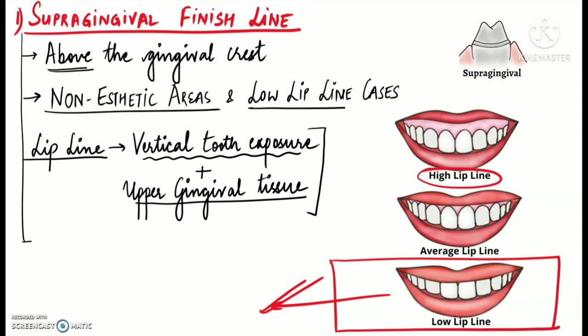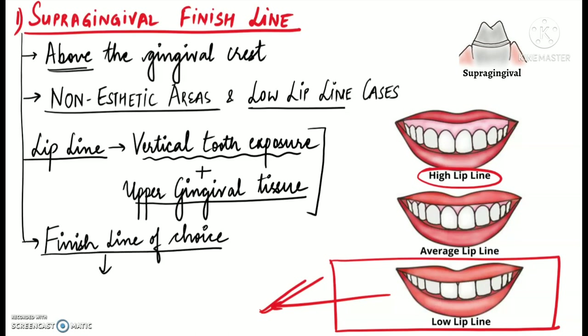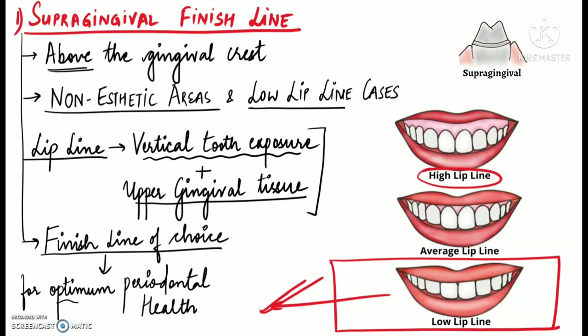I will talk about the lip lines in a separate video and the link will be provided in the description box below. For now, supra-gingival finish lines are preferably given in low lip line cases because the aesthetics factor will not be much of an issue as the finish line will be covered by the upper lip. Ideally, finish lines should be placed supra-gingivally whenever possible, as they stay away from the periodontal tissues and should be the finish line of choice for optimum periodontal health.